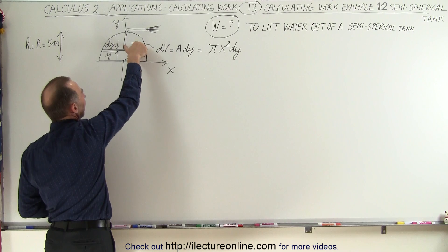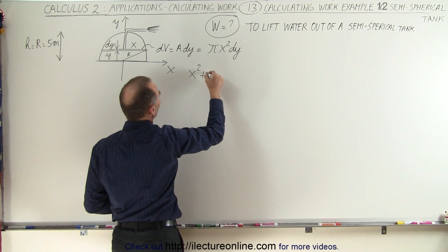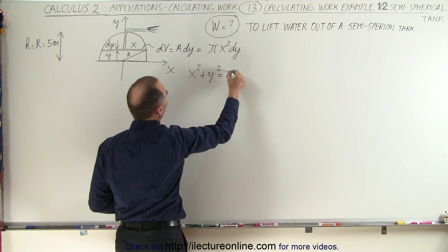Y would be the height, x would be this, so we can write that x² + y² = r².